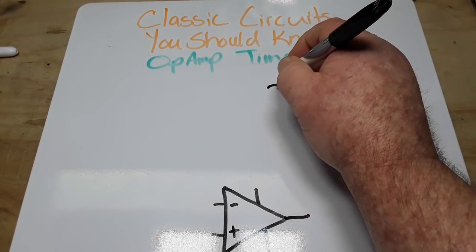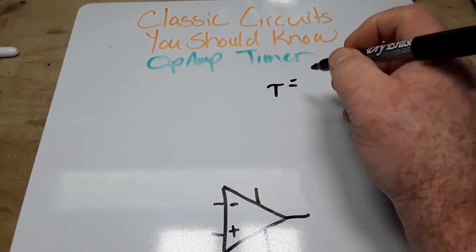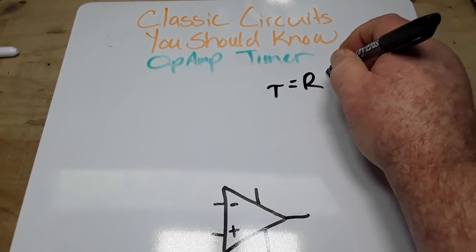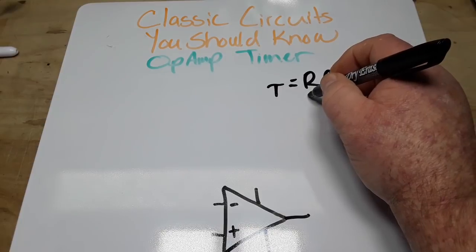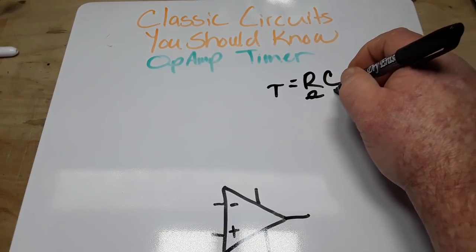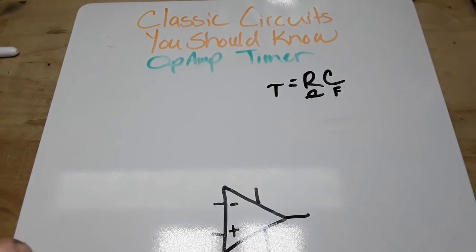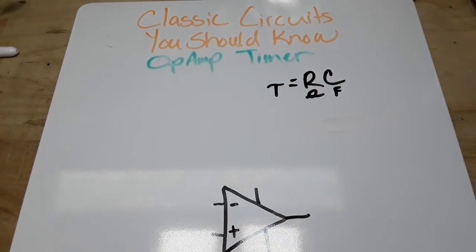So you know of course that tau, the time constant, equals R times C, and R has to be in ohms and C has to be in farads. So make sure you do your calculations with the right amount of zeros after the decimal point or things won't work out just exactly as you want.